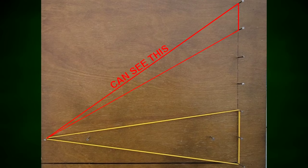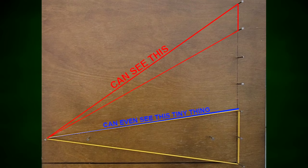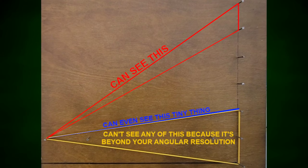It says that you can see this, which we agree. It says that you can even see this tiny thing, which we agree. It then surprised us with this result, that you can't see any of that because it's beyond your angular resolution.